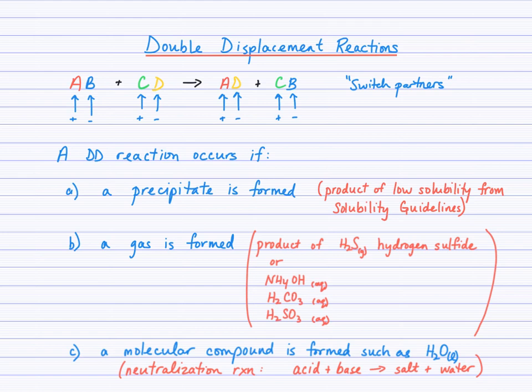In the products, A is now paired up with D and C is paired up with B. It's important to notice that we write C first and then B because the cation is always written first in an ionic compound.